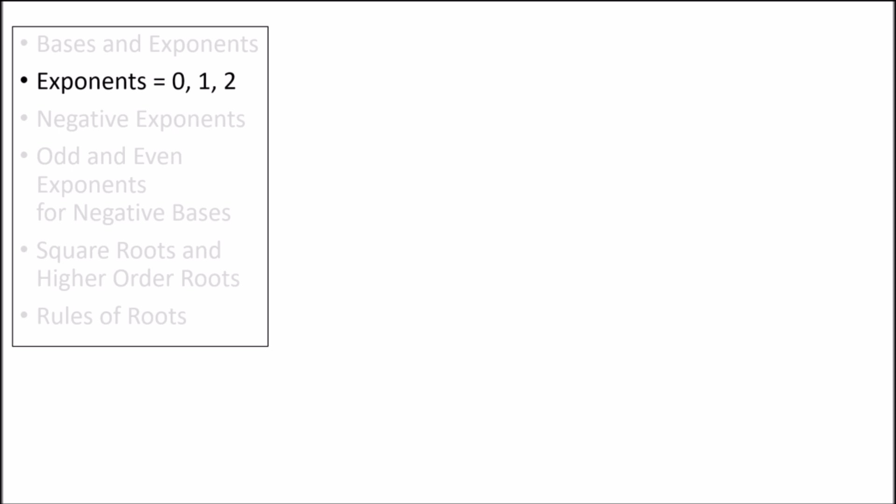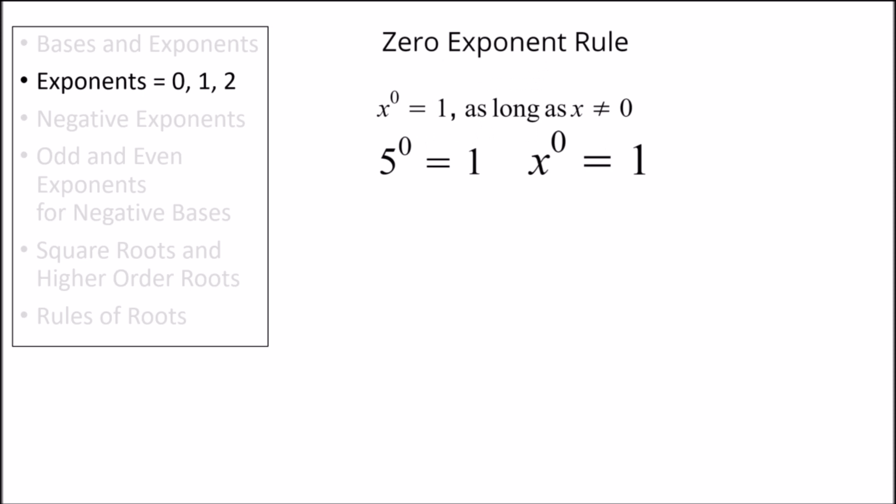There are three exponents that come up pretty often, so let's discuss them in more detail. First we have the exponent 0. The property here is that any number raised to the power of 0 is 1. There is one exception, however, which is that 0 raised to the power of 0 is undefined. So pretty much any time we see something raised to the power of 0, we just replace the entire term with the value 1.